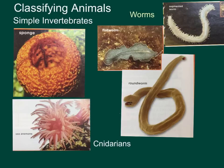Your segmented worms — your earthworms, or annelids — have a body plan that's divided into sections or segments, and they've got a two-way digestive system. They have organs: they've got a stomach, they've got a heart, they've got a brain, so they're the most developed worm of all these groups.